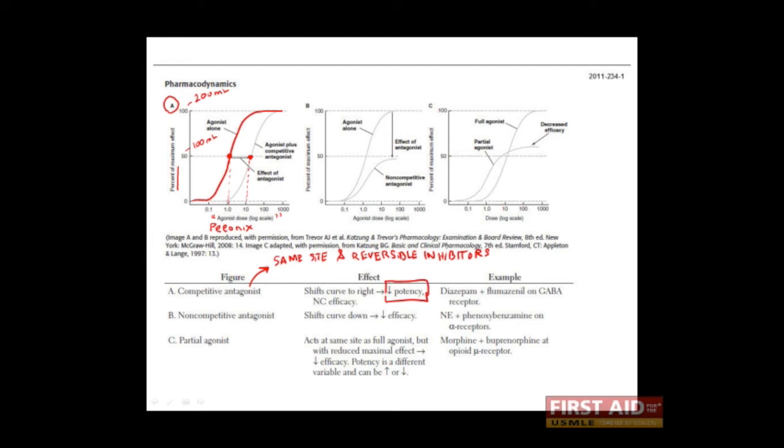Notice, however, that at very high concentrations of our drug, we are still able to get our patient to pee 200 milliliters. And this is because, much like the so-called competitive inhibitors that we discussed very early on in this lecture, we can give enough drug to out-compete the competitive antagonist.